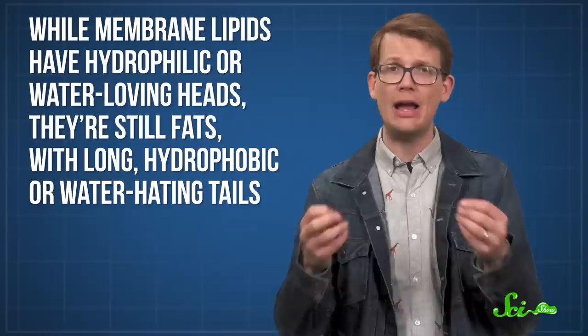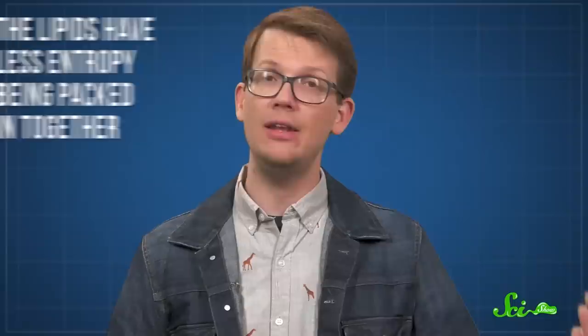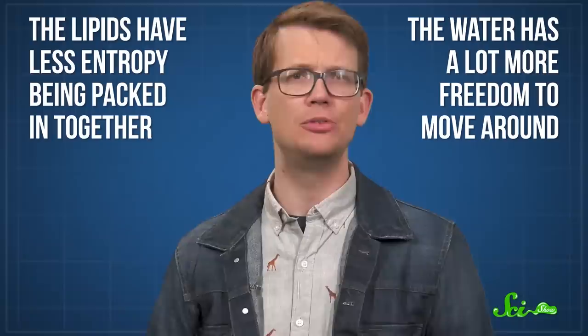Practically, this means that when water molecules come in contact with a lipid's tail, they kind of become frozen in a grid around them. This is a loss in entropy for the water molecules, because they're not randomly distributed anymore. So it's a trade-off. The lipids have less entropy being packed in together, but the water has a lot more freedom to move around when it's not coming into contact with all those hydrophobic tails.